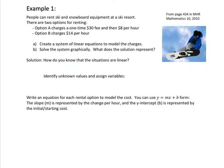Let's have a look at example 1, where it's looking at two options for renting ski and snowboard equipment at a ski resort. Option A charges a one-time $30 fee and then $8 per hour. Option B charges $14 per hour and has no initial fee. These two options are going to help us set up our two linear equations. How do we know that the situations are linear? We know they are linear because they both have a constant rate of change.